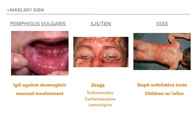For treatment: pemphigus vulgaris — steroids, because it's an autoimmune process, IgG against desmoglein. SJS slash TEN — discontinue the offending agent. If they're on carbamazepine and develop the rash, just stop carbamazepine; it's usually self-resolving with supportive care. Patients with very diffuse involvement from toxic epidermal necrolysis may need the ICU, but discontinuing the drug is the answer. For staphylococcal scalded skin syndrome — it's staphylococcal, so treat staph; give IV vancomycin.